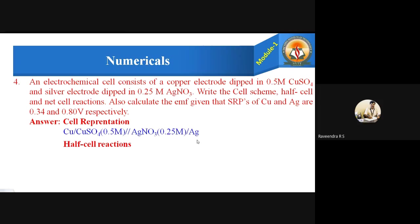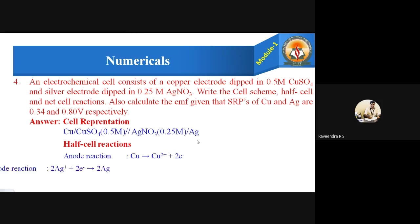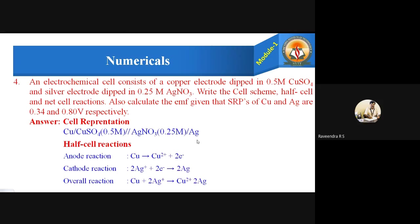Now for the cell reactions, let us look at the half-cell reactions. At the anode, oxidation occurs: Cu → Cu²⁺ + 2e⁻, so two electrons are released. At the cathode, reduction occurs: 2Ag⁺ + 2e⁻ → 2Ag. The overall cell reaction is: Cu + 2Ag⁺ → Cu²⁺ + 2Ag.